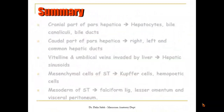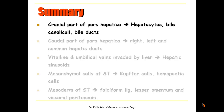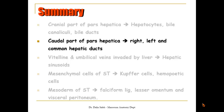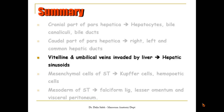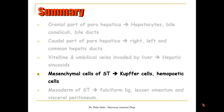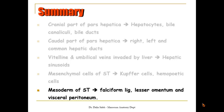In summary: the cranial part of pars hepatica will form the hepatocytes, bile canaliculi, and bile ducts. The caudal part of pars hepatica will form the right and left common hepatic ducts. The vitelline and umbilical veins, invaded by the liver tissue, will form the hepatic sinusoids. The mesenchymal cells of the septum transversum will form the Kupffer cells and the hemopoietic cells. The mesoderm of the septum transversum will form the falciform ligament, the lesser omentum, and the visceral peritoneum.